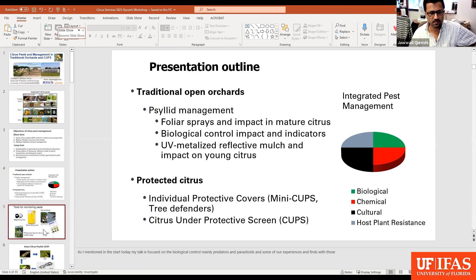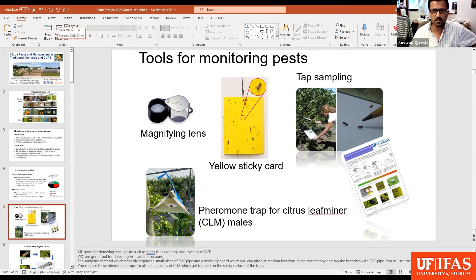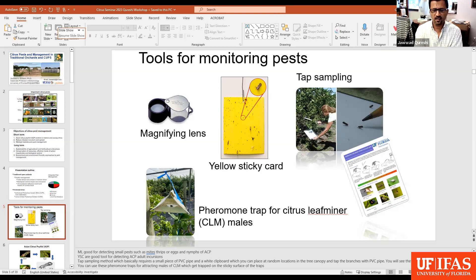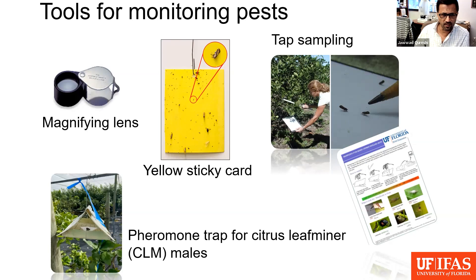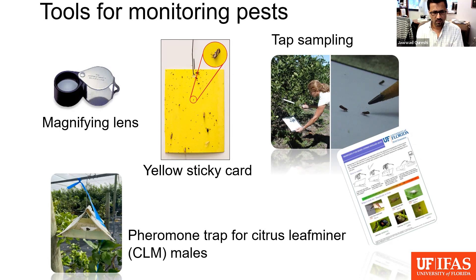Irrespective of what system we are talking about — traditional or protective — monitoring is critical. You need to be out there looking for these pests to assess their presence and level of intensity so that you can make decisions to manage them. Tools include a magnifying lens, so that you can see small insects, since several of them colonize young shoots. You'll need a magnifying lens to look for immatures of Asian citrus psyllid, leafminer larvae, aphids, and those kinds of pests.